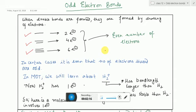In each of these cases, all bonds involve an even number of electrons — two, four, or six — because each of the two combining atoms contributes one electron to each bond. So the total number of electrons will always be even and not odd. The problem comes in certain cases where the number of electrons shared are odd. In molecular orbital theory, we learn about H2+, which is an H2 molecule that has lost one electron.